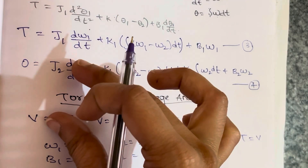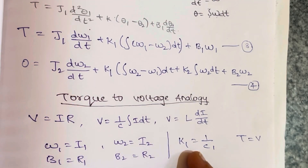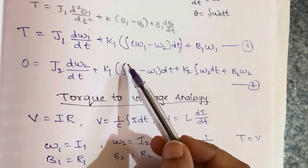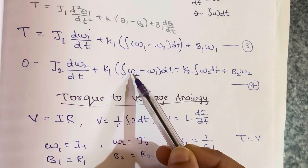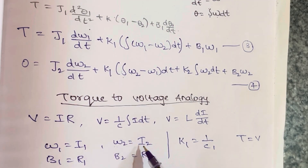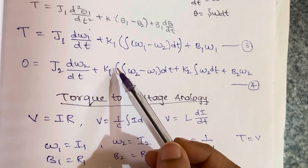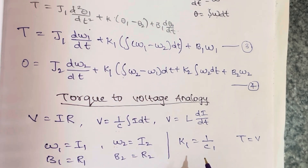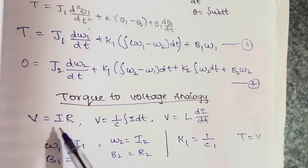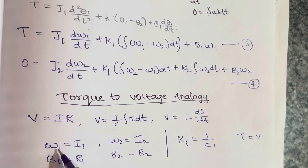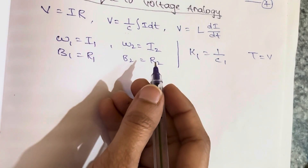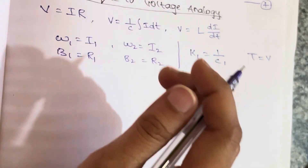Just compare this equation with the circuit equations. You can observe that (1/C) times the integration of i dt corresponds to the integration term, so ω corresponds to i. Similarly, 1/C is in place of K1, so K1 equals 1/C1. And B·ω corresponds to R·i, so B equals R. Now I will substitute all these parameters into equations 3 and 4.